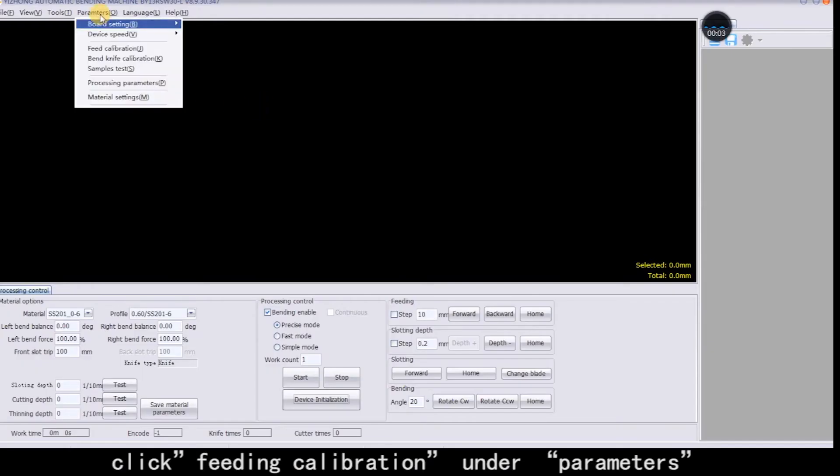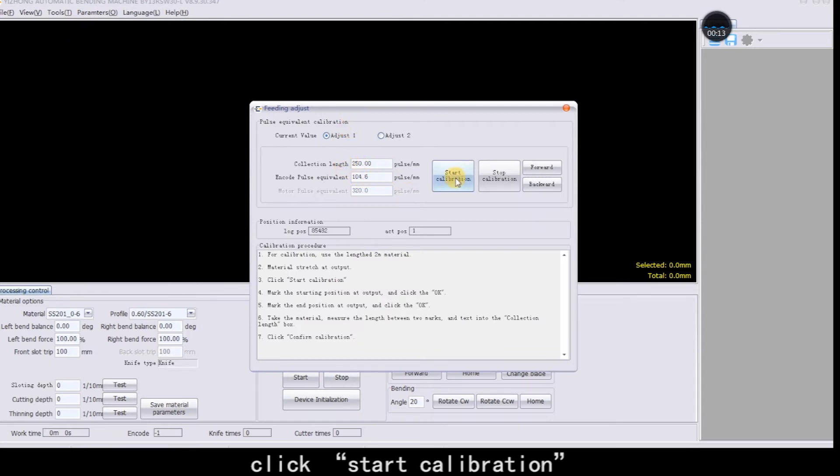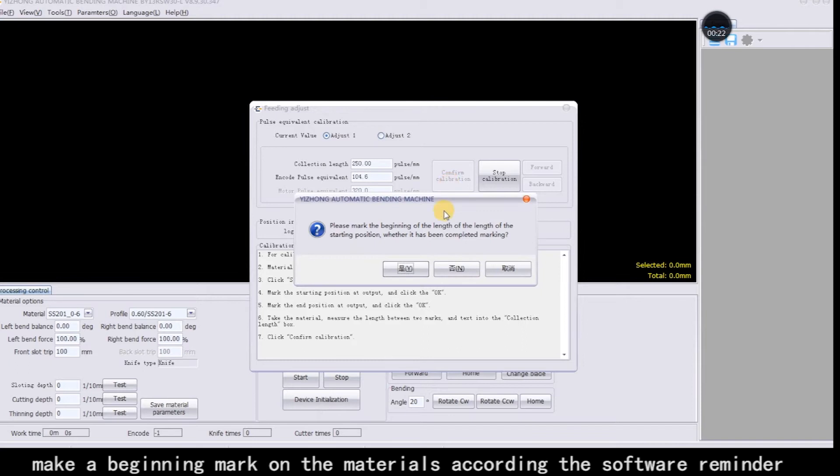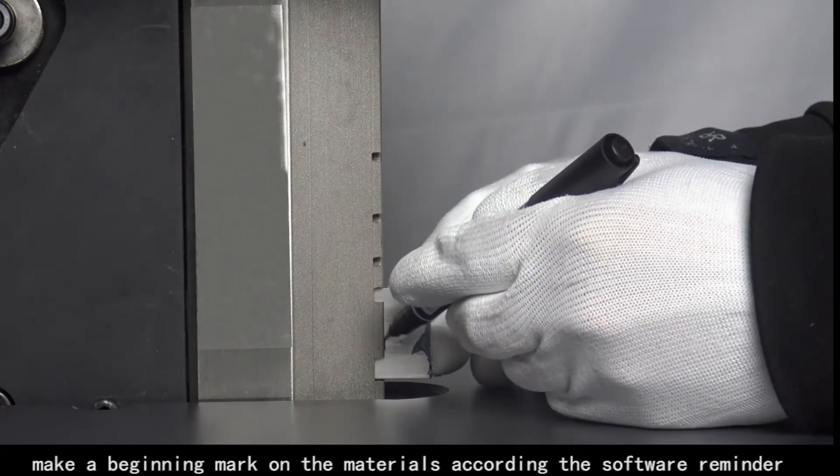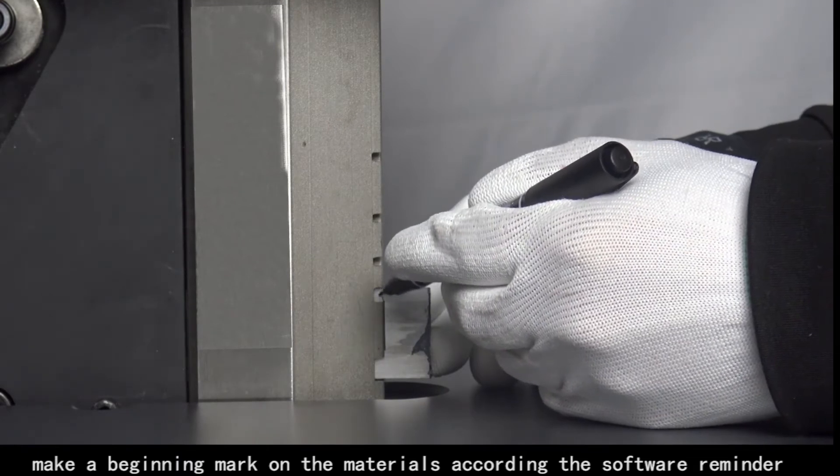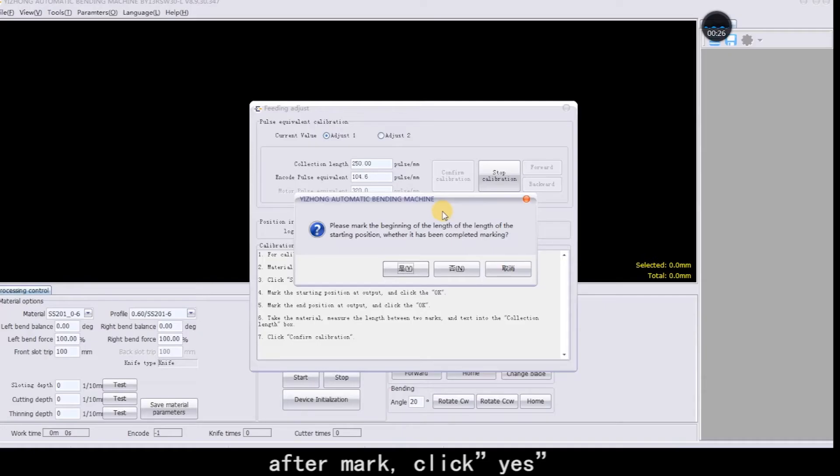Click feeding calibration under parameters. Click start calibration. Make a beginning mark on the materials according to the software reminder. After marking, click yes.